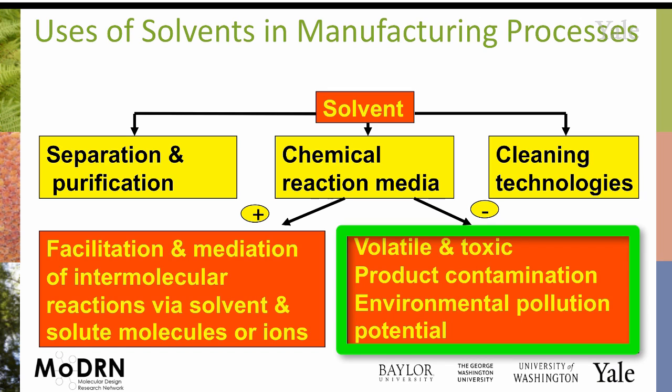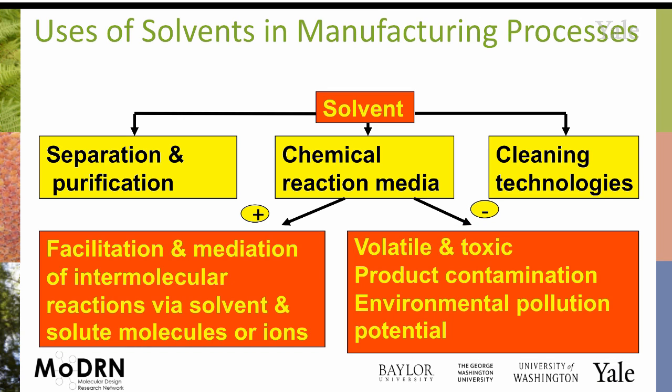On the negative side, we talked about some of these at the beginning of the class. Volatility goes hand-in-hand with toxicity because it increases your exposures. And then product contamination — where might that be an issue? We were just talking about aspirin synthesis. If you're taking a bottle of aspirin and it was made with 200 times as much solvent as aspirin, even if they've got that down to 50 or 100 parts per million, most people don't want to be taking 100 parts per million of any of these solvents with their pharmaceutical.